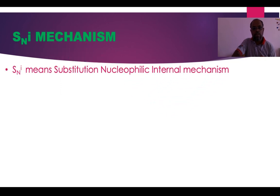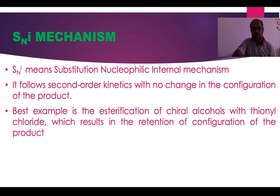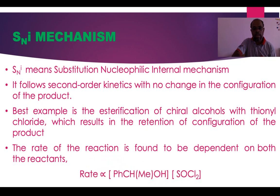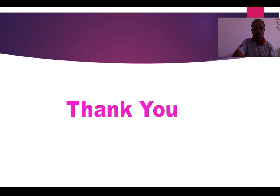The SNi mechanism is an internal nucleophilic substitution. It follows second-order kinetics with no change in configuration — retention of configuration. The best example is esterification of a chiral alcohol with thionyl chloride. The rate of reaction is proportional to both thionyl chloride and the alcohol. Thionyl chloride approaches the alcohol, releasing HCl and forming an intermediate. The Cl⁻ of the intermediate then attacks the alkyl group from the same side as SO2 leaves, forming an alkyl halide with retained configuration.